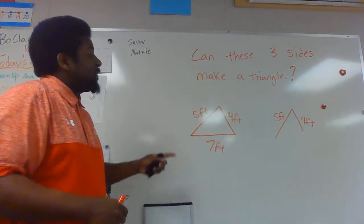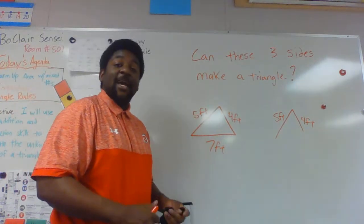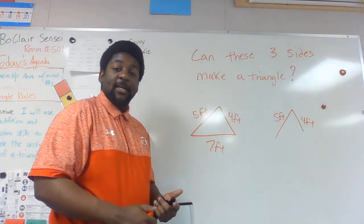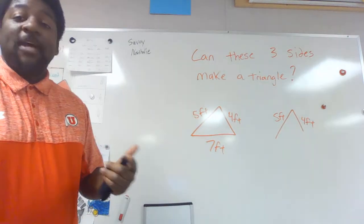What the rule says is if you have three lengths of the triangle, the two smallest sides should add up to be bigger than the third side. If they're not bigger than the third side, those sides actually will not make a triangle.